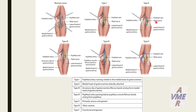We have 5 types of popliteal entrapment. This is the normal course of the vein, artery, and medial head of gastrocnemius. Type 1: popliteal artery running medial to the medial head of gastrocnemius.